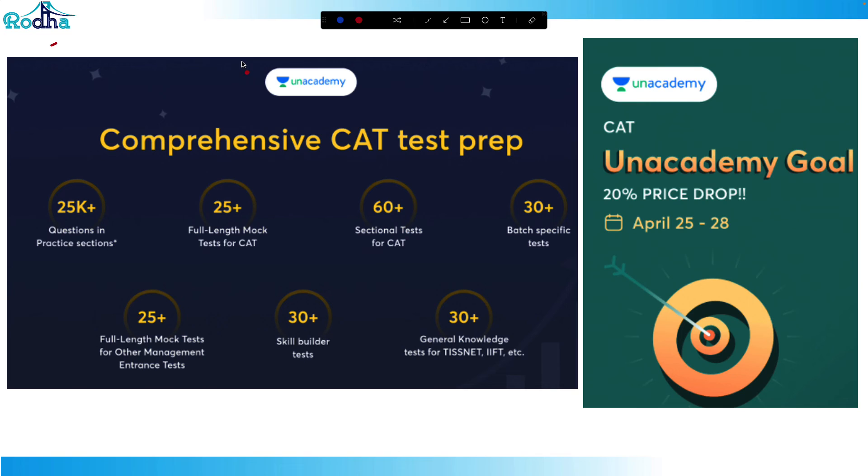Also guys, Unacademy is offering a 20% price drop for the month of April, last days April 25 to 28. You can use my referral code RAVIRODA to avail this discount.